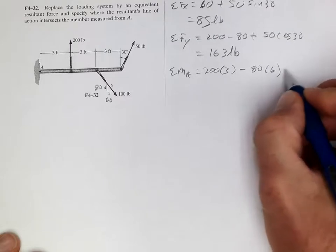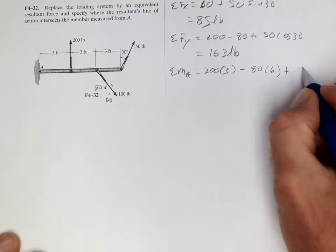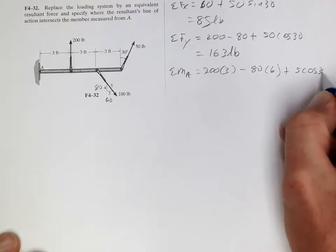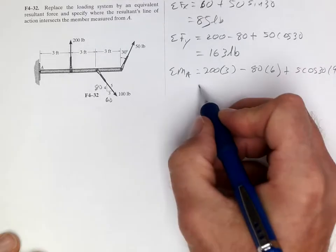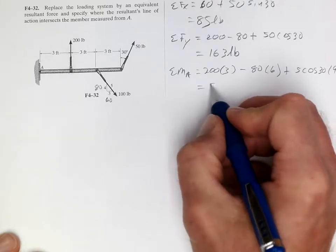Plus 50 cosine 30 times 9, which also causes positive, negative. So that equals 510.